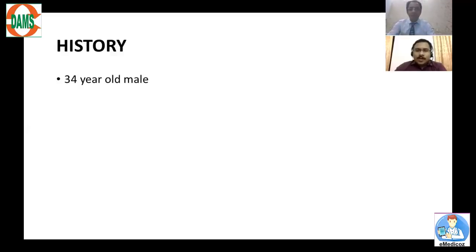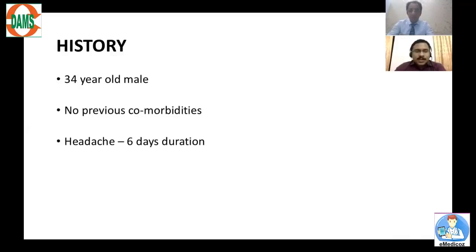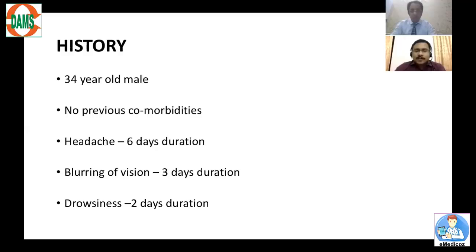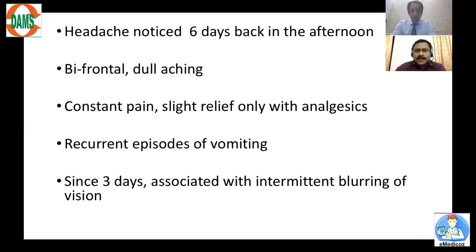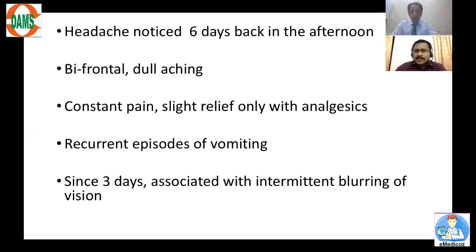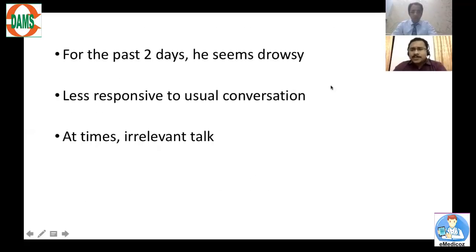This is a 34-year-old male with no previous comorbidities, presented with headache of six days duration, blurring of vision of three days duration, and drowsiness of two days duration. In detail: the headache was noticed around six days back in the afternoon — a bifrontal dull aching pain, constant, with only slight relief with analgesics. It was associated with multiple episodes of vomiting, and for the past three days he has had intermittent blurring of vision.